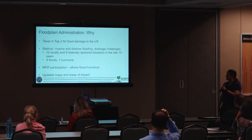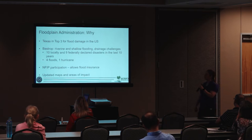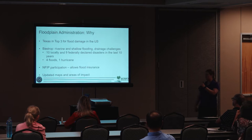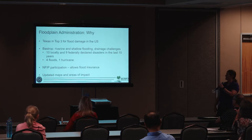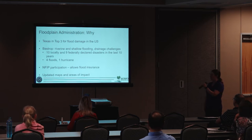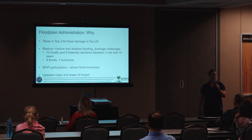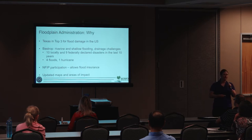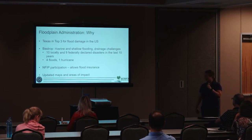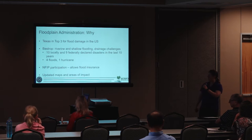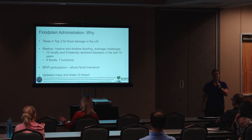Why do we do this? Texas is in the top three for flood damage in the U.S. Bastrop in particular is very prone to riverine and shallow flooding. There are a lot of local drainage challenges. We've had ten declared disasters in the last ten years, half of which are water-related — four floods and Hurricane Harvey. The National Flood Insurance Program allows property owners to get flood insurance. If we don't participate and don't have regulations that meet minimum standards, you won't be eligible for flood insurance. We also provide updated maps that FEMA puts out so that you know the areas of impact.